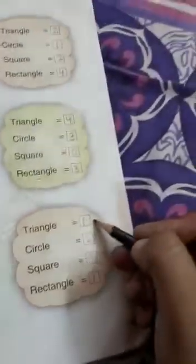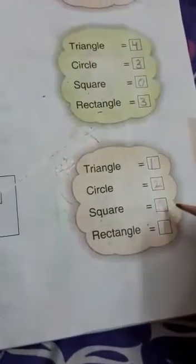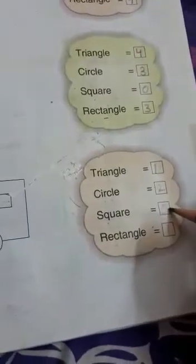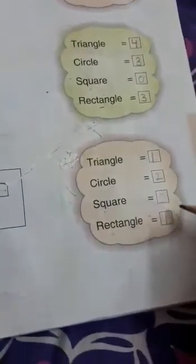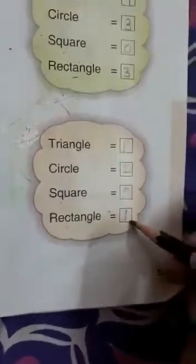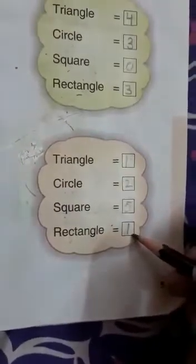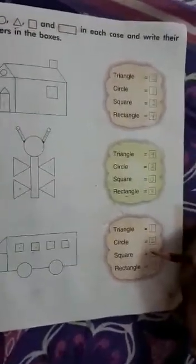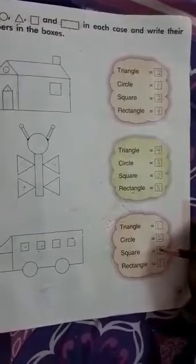So triangle 1, circle 2, square 5, rectangle 1. Clear? Now you will do this page in your math book and revise the same page in your rough notebook also. Thank you.